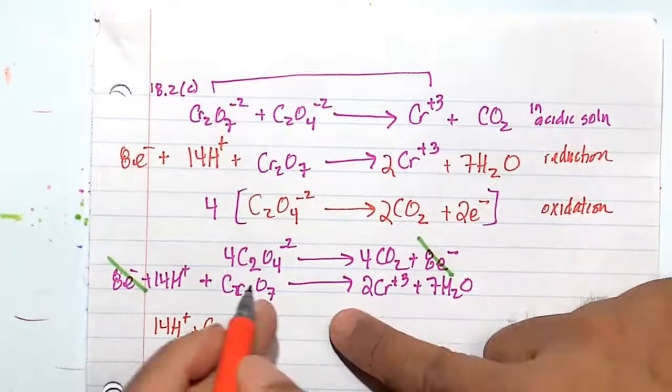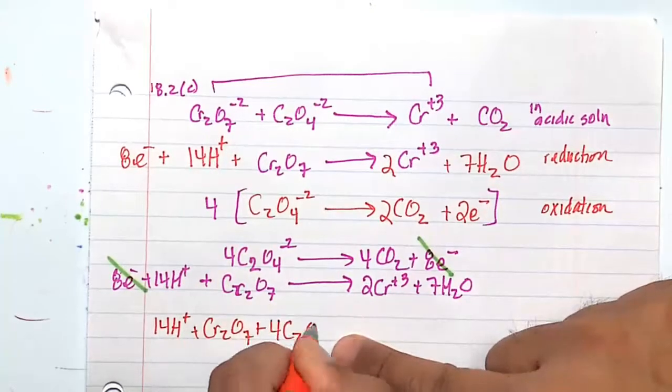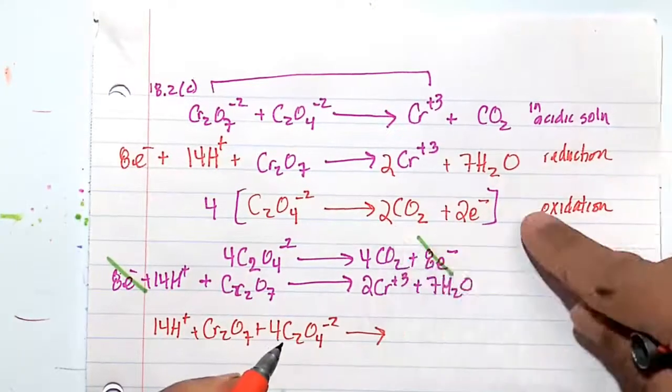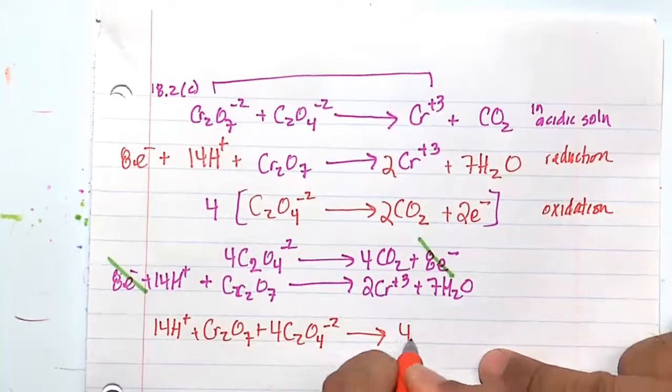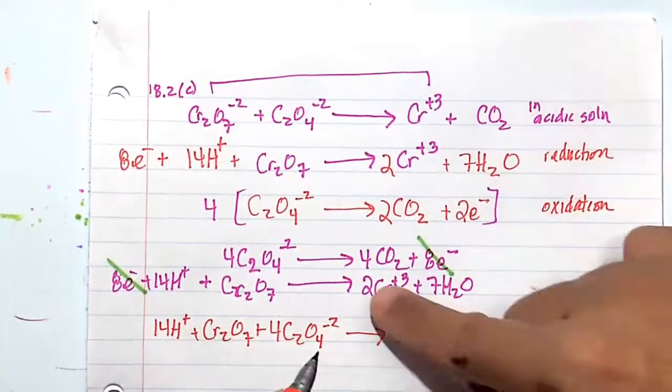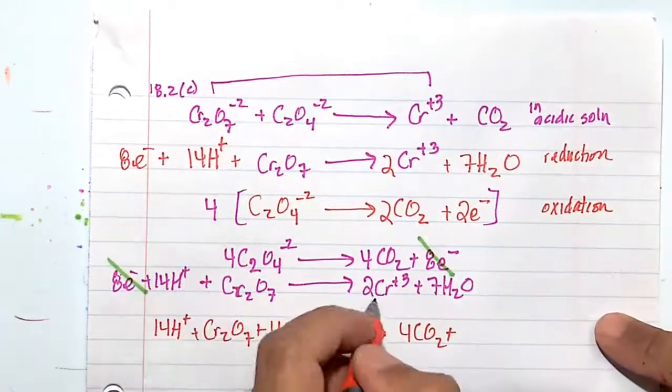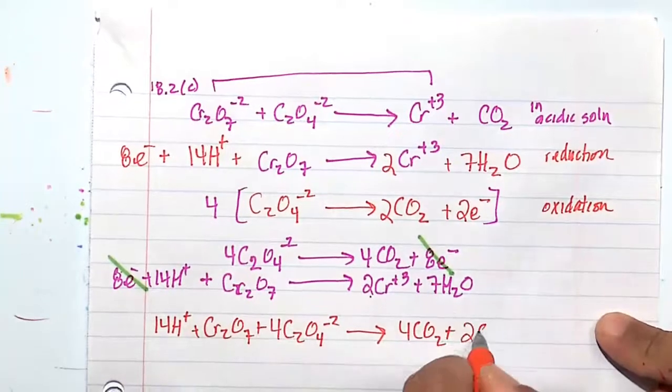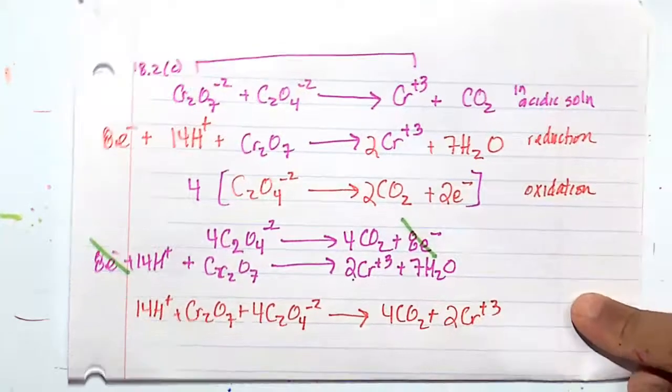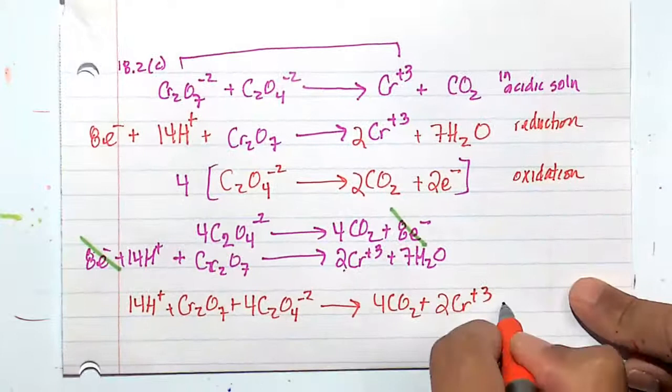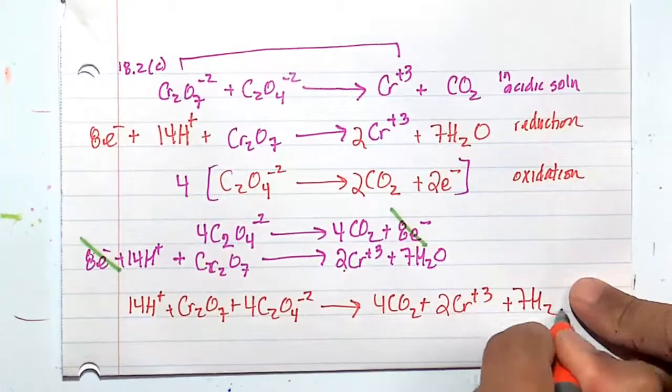CR2O7 plus 4C2O4 minus 2. And that's going to go to 4CO2 plus 2CR3, CR plus 3. And then finally, we have seven waters.